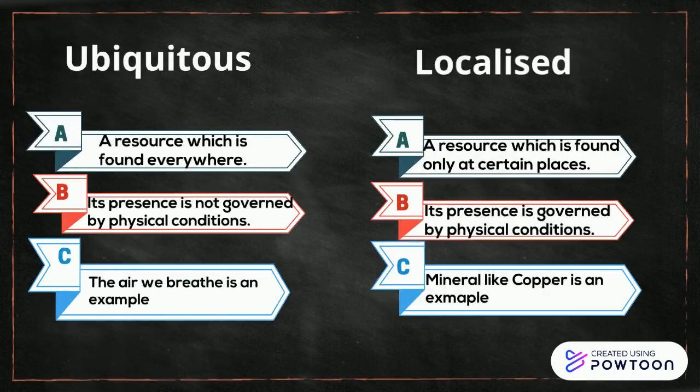Let's differentiate between ubiquitous resources and localized resources. Point number 1 — we will talk about their location. Ubiquitous resources are found everywhere, while localized resources are found only at certain places.